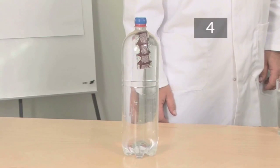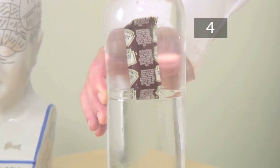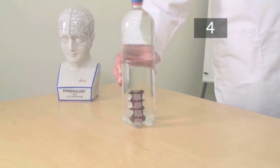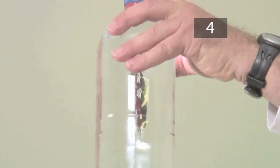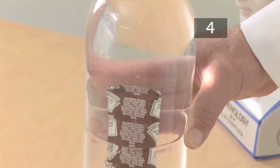Fish use this method to enable them to sink or float. They have a small air sack in their bodies and use their muscles to squeeze or relax this sack. Submarines can be made to rise and sink using the same principle, by pumping water in and out of tanks on board.